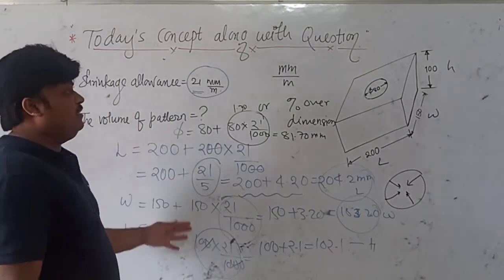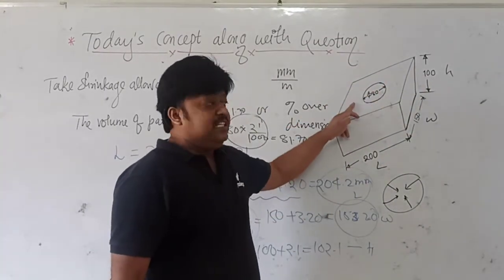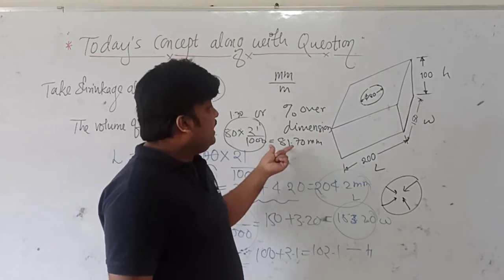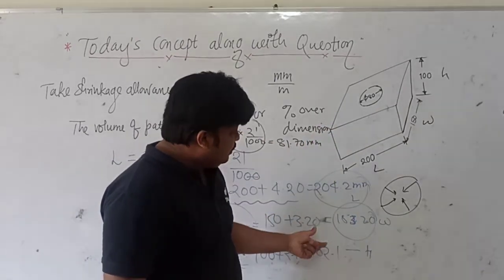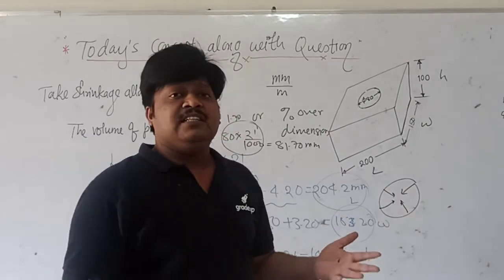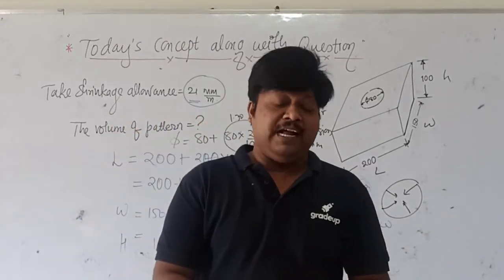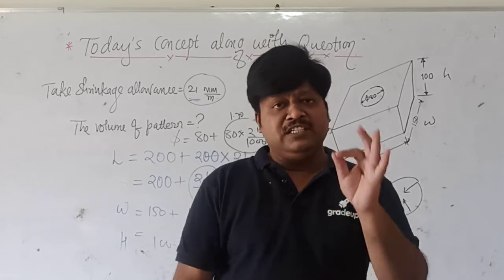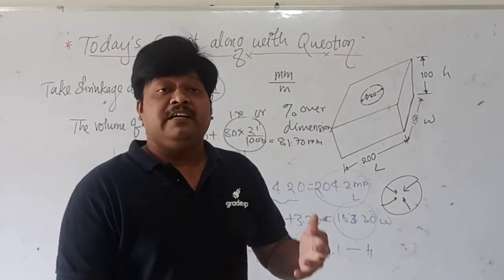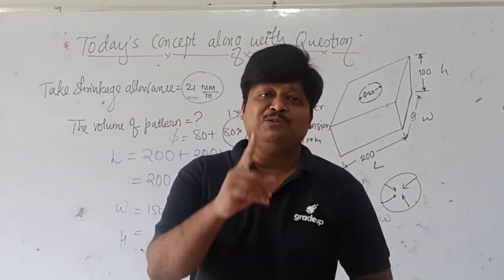Now you can easily calculate the volume of the pattern: that is the volume of the slab — product of the three dimensions — minus the cylindrical bore volume, which is (π/4) × (81.70)² × 102.1. You can also find the ratio of pattern volume to casting volume using these values. The key takeaway is: whether it is external or internal dimension, we add the shrinkage allowance when the material is shrinking. When material expands, we give negative shrinkage allowance. Thank you so much, dear students.